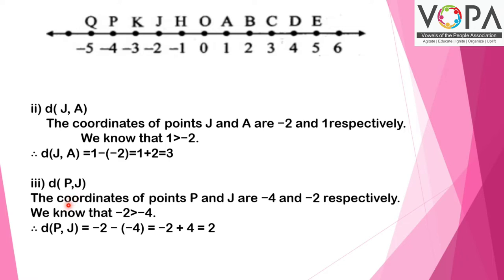Distance of P, J: The coordinates of P are -4 and J is -2. We know -2 is greater than -4. Hence, distance of PJ equals -2 minus (-4), which will be equal to -2 plus 4, equal to 2.